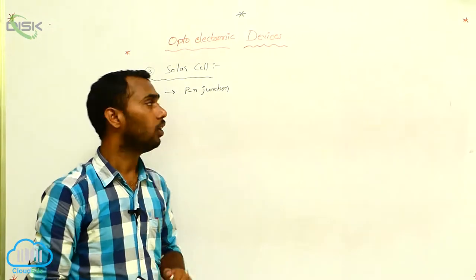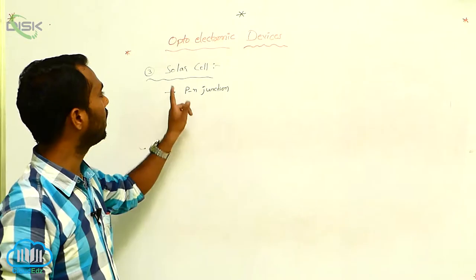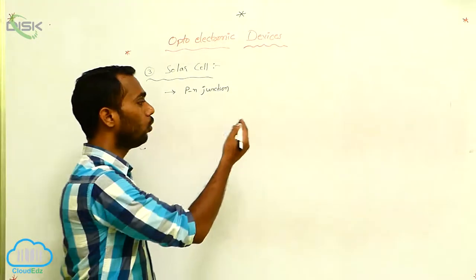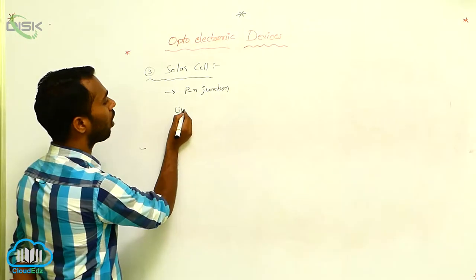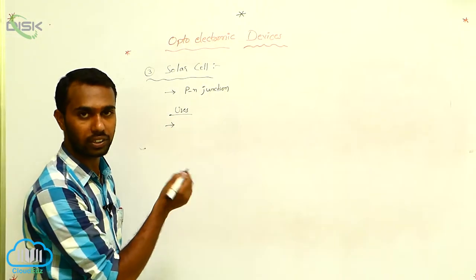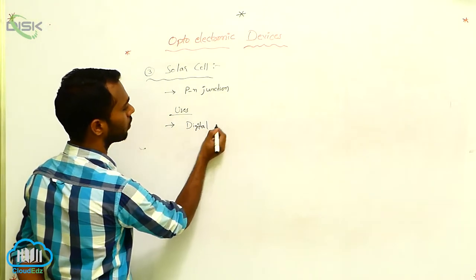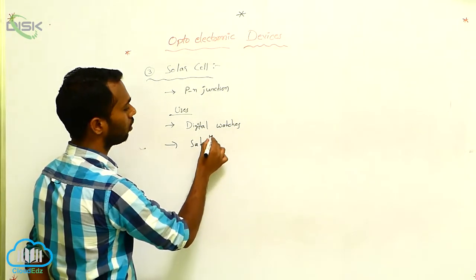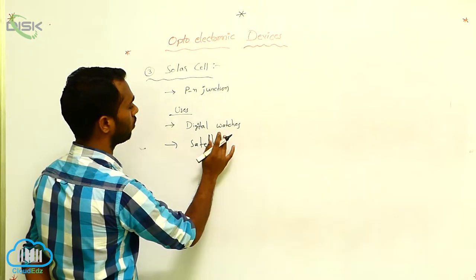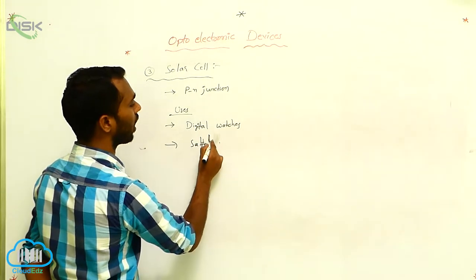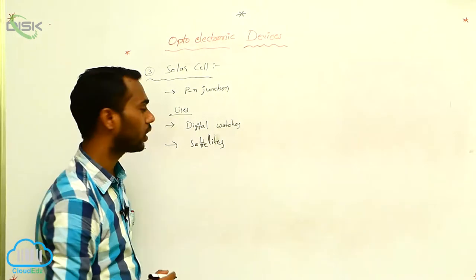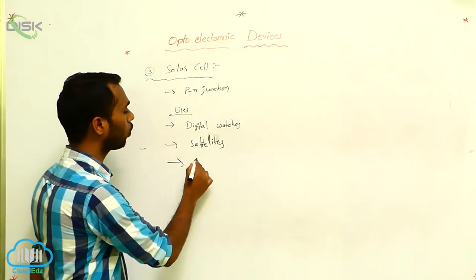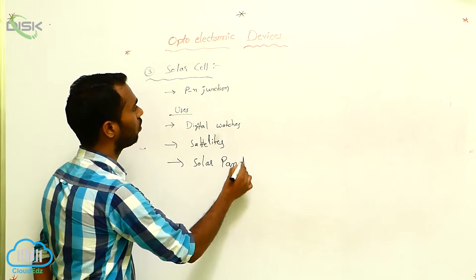Same as a photodiode, this solar cell converts solar energy — sun rays, solar energy — into electrical energy. We use solar cells in digital watches, artificial satellites, and solar panels.